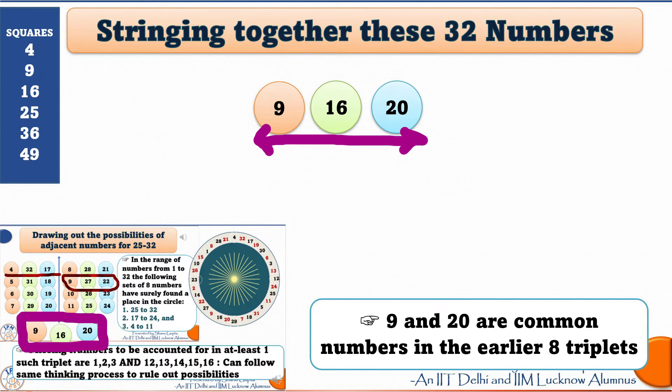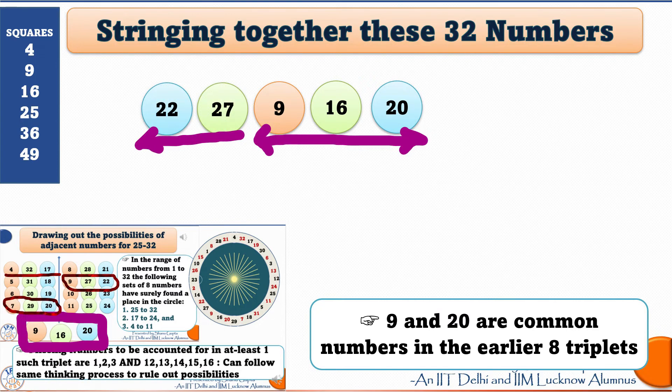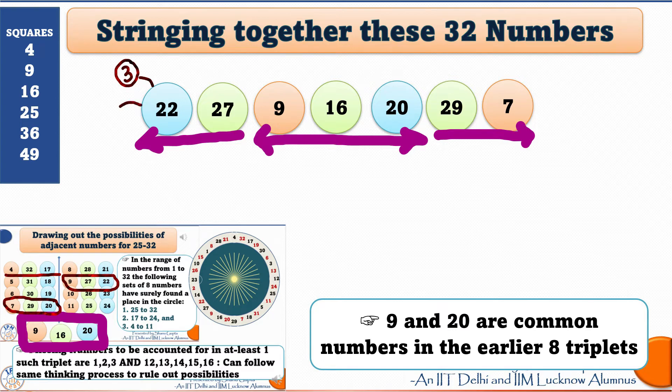Now, on the left, a square greater than 22 could be 25. So, the next number could be 3 or else another square greater than 22 could be 36. So, the next number could be 14. There are two branches possible.